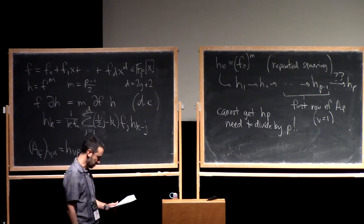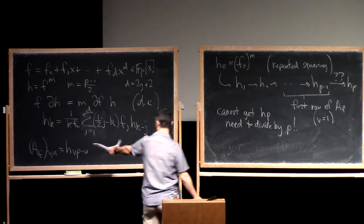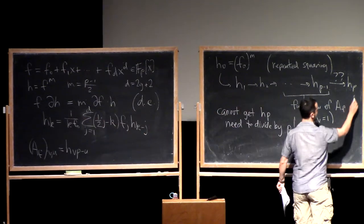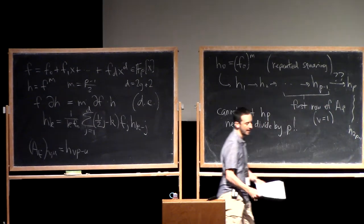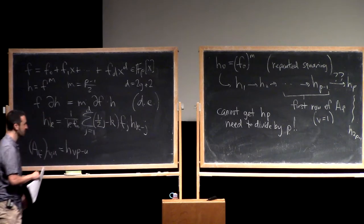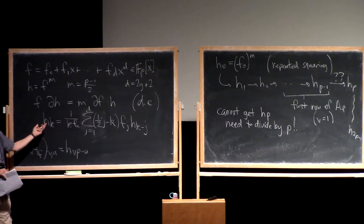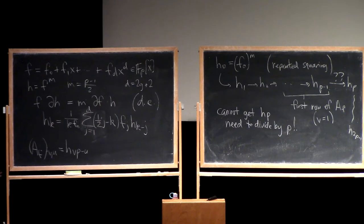This is a bit of a problem. We actually need to do h_p because we need to get to the second row — we need to keep going all the way to h_{2p minus 1}. You might say, well, I can't get h_p, but I could try k equals p plus 1 — that gives some relation involving h_p. But you can play around with it and it doesn't work: there's always going to be one degree of freedom you haven't dealt with.